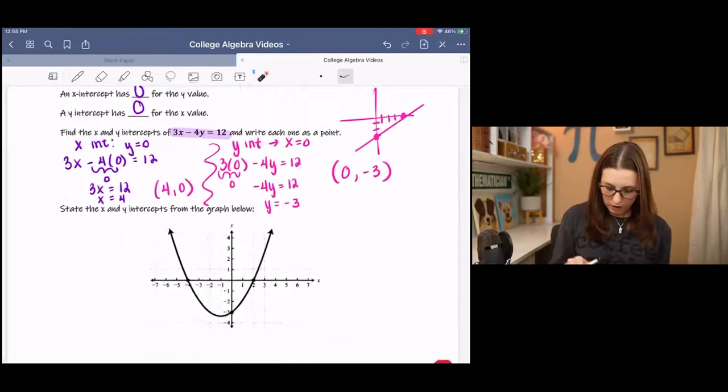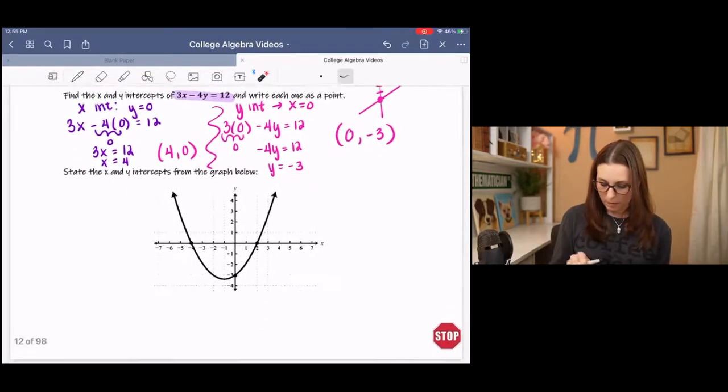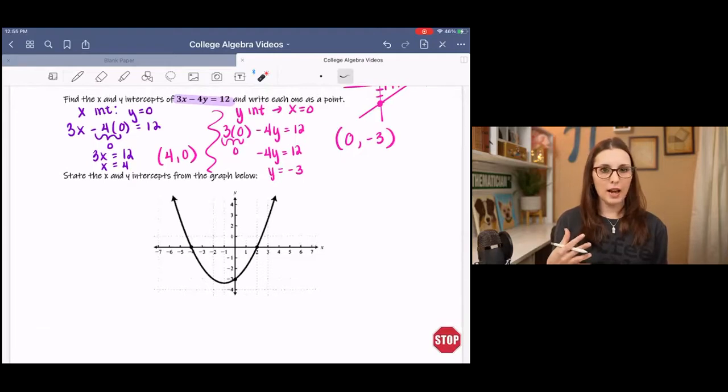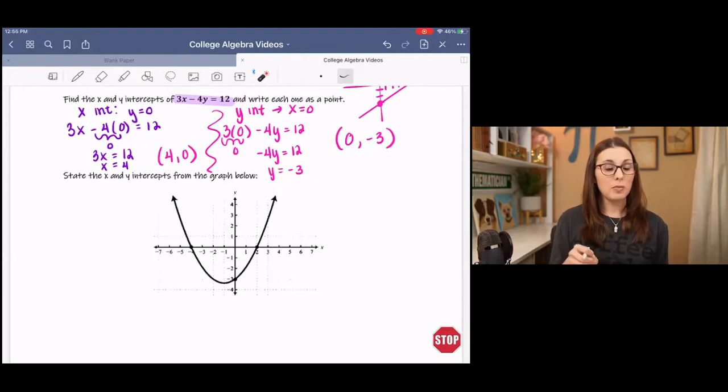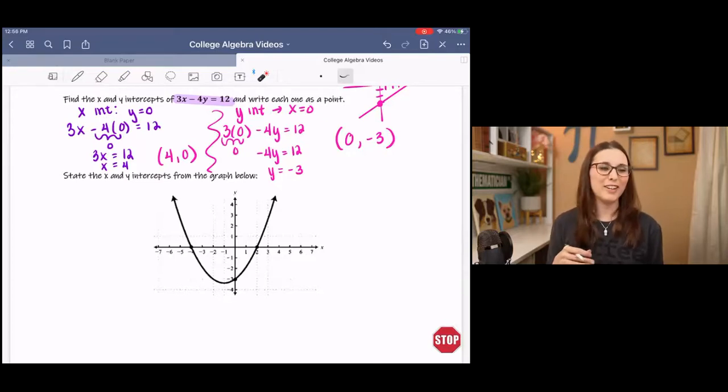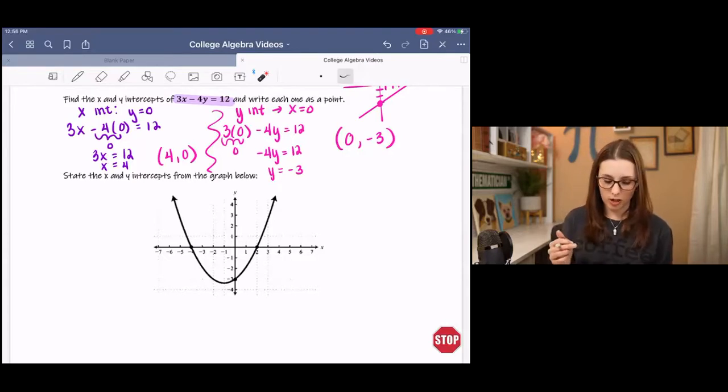And then if we go into something that's nonlinear, we can still state x and y intercepts. Now, if it's nonlinear, there might be more than one x-intercept. There might be 3 or 4 or 5. So in this case, I want you to take a look at the graph below and pause the video to state the x-intercepts and the y-intercepts. It might be 1, but anyway, I don't want to spoil it for you. Go ahead and state them as points. Write them as points. And then come back and check your answer.